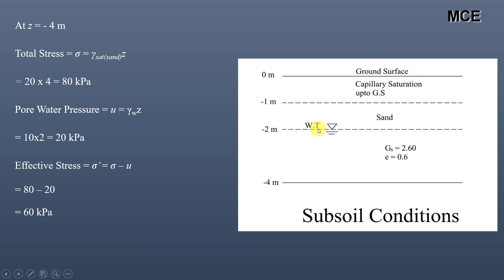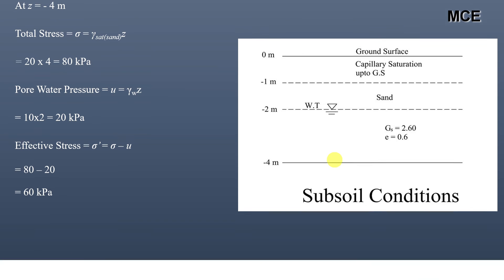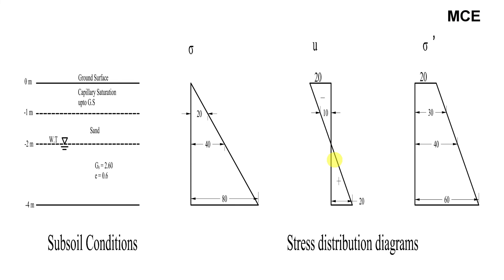Remember: above the water table, pore water pressure is negative; below the water table, pore water pressure is positive. You can also draw the stress distribution diagram. Summary of results — At Z = 0: total stress = 0, pore water pressure = −20 kPa, effective stress = +20 kPa. At Z = 1 m: total = +20 kPa, pore = −10 kPa, effective = +30 kPa. At Z = 2 m: total = +40 kPa, pore = 0, effective = +40 kPa. At Z = 4 m: total = +80 kPa, pore = +20 kPa, effective = +60 kPa.